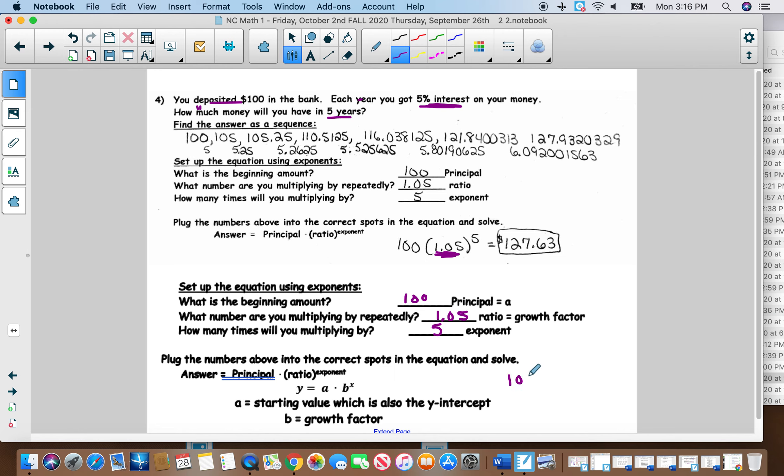And again, 100 times 1.05, and then it would be raised to the 5. So you'd get $127.63. Make sure when it's talking about money that you always round it to the nearest cent. And the nearest cent is basically the same thing as the nearest hundredth. So you can count those are kind of interchangeable.